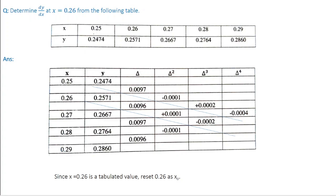We want to find the derivative at x = 0.26. Looking at the original difference table, x₀ is the first x value with its corresponding y₀ and leading differences. Notice that x = 0.26 is one of the tabular values. The trick is: if x is a tabular value, set it as x₀. So 0.26 becomes the new x₀, its y value becomes y₀, and the corresponding diagonal entries become the new leading differences. All previous leading terms are no longer required.